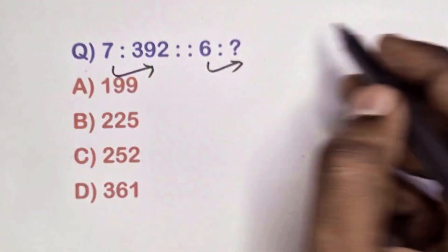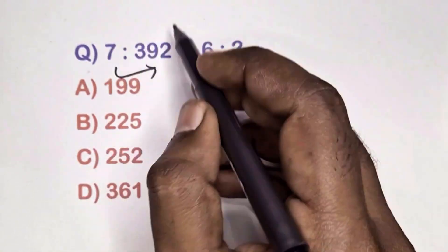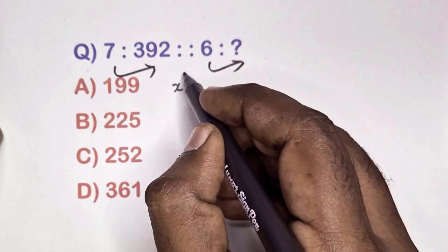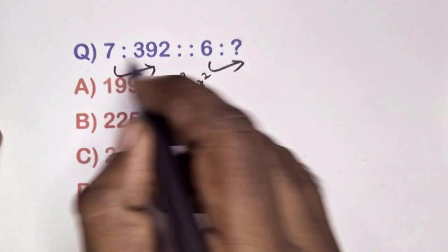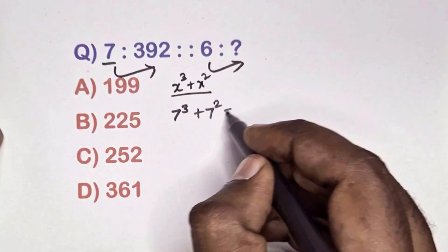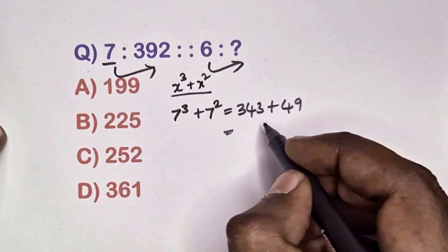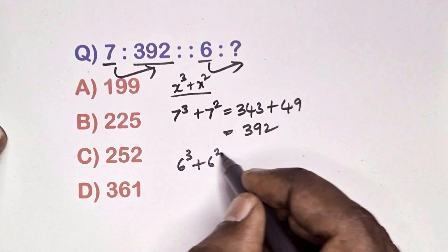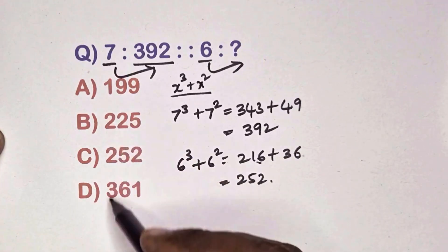Find the relation between this pair of numbers. The small number relates to the larger number by the formula x cubed plus x squared. Take 7: 7 cubed is 343 and 7 squared is 49; add these to get 392. Same way, 6 cubed is 216 and 6 squared is 36; adding gives 252. Option C is the correct answer.